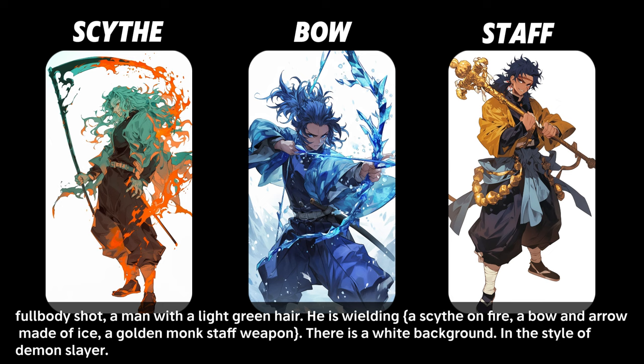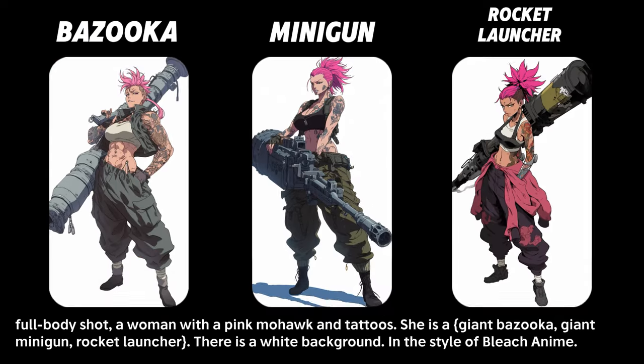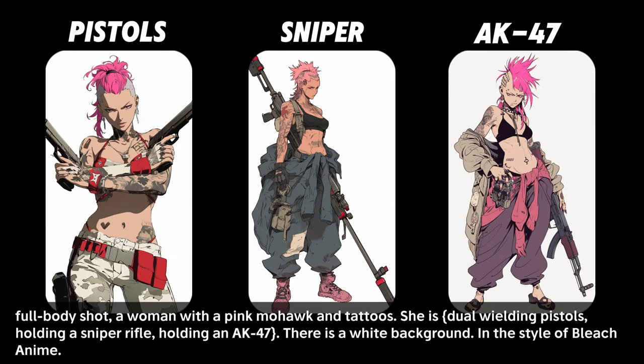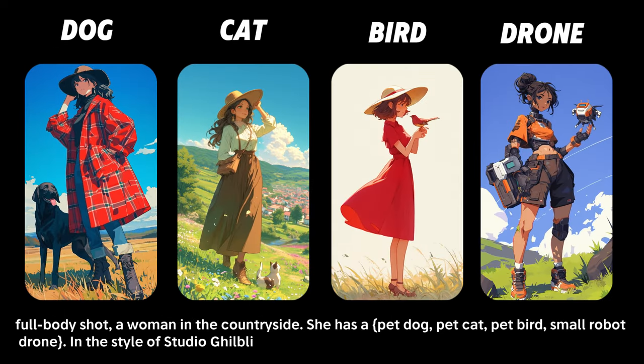We've seen a bunch of medieval weapons, but what about something more modern? Firearms are extremely popular for anime characters, featuring powerful explosives that leave a big impact. You can go with something hard-hitting like a rocket launcher or a bazooka — these types of characters tend to be on the crazy side and love to blow stuff up. You can also try something faster and more nimble like pistols. The Bleach anime art style is especially suited to generating characters that wield firearms. Other common props include pets — animals like dogs, cats, birds, or even robot drones make perfect companions for their characters.